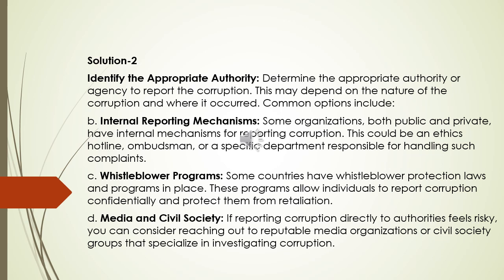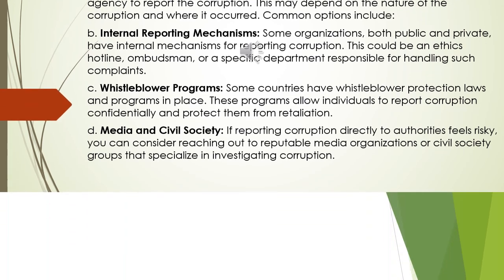Solution 2: Identify the appropriate authority. Determine the appropriate authority or agency to report the corruption. This may depend on the nature of the corruption and where it occurs. Common options include internal reporting mechanisms. Some organizations, both public and private, have internal mechanisms for reporting corruption, such as an ethics hotline.